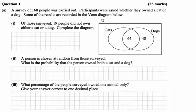Part 1: Of those surveyed, 19 people did not own either a cat or a dog. Complete the diagram. Okay, well the first thing we should do is realize if there's 168 people in total, that means that the universal set is 168, so we can write that up there.